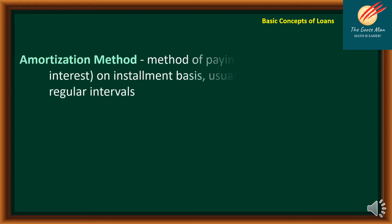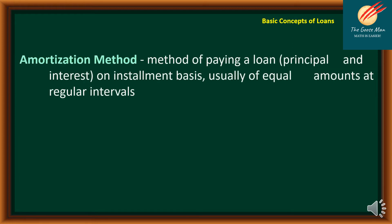Let's talk about the amortization method. This is the method of paying off two things: first, the principal, and the other one is the interest. You need to pay these usually in equal amounts at regular intervals.